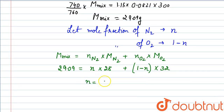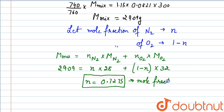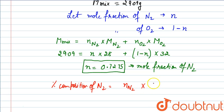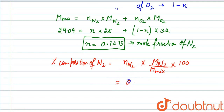We get the value of n equal to 0.7275 — this is the mole fraction of N2. To find the percentage composition of N2 by mass, we write: mole fraction of N2 × molar mass of N2, divided by molar mass of the mixture, times 100. That is 0.7275 × 28 divided by 29.09, times 100.